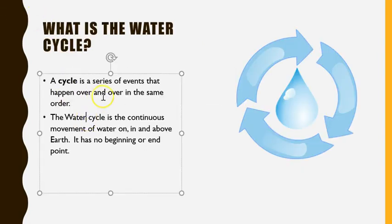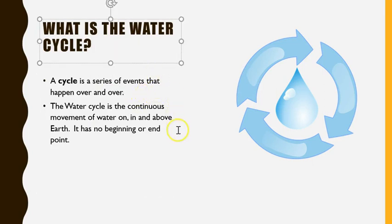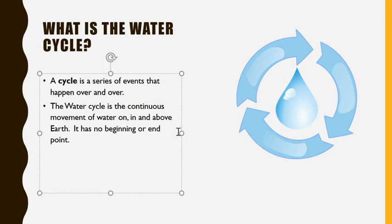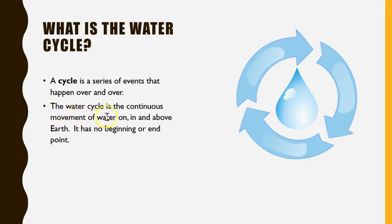The water cycle doesn't necessarily happen in the same order, but the events happen over and over. Something really amazing about the water cycle is it doesn't always go in the same order. The water cycle is the continuous movement of water on, in, and above earth. It has no beginning or end point.